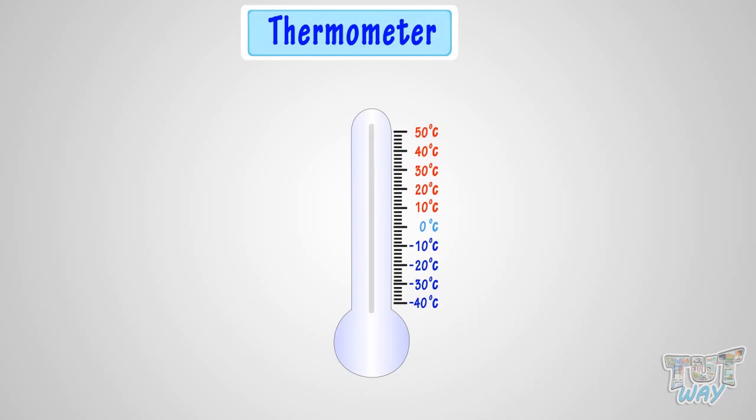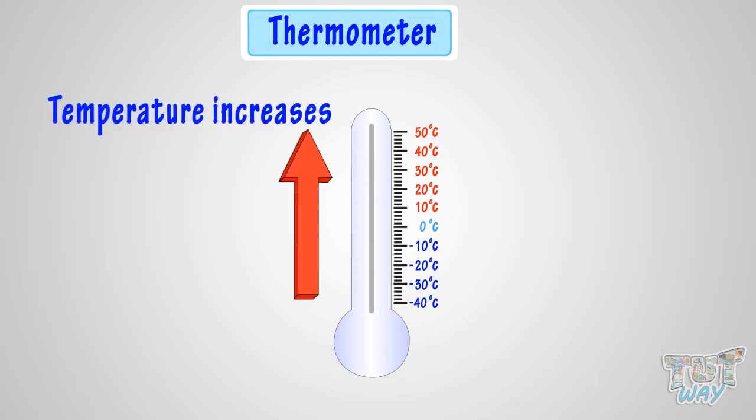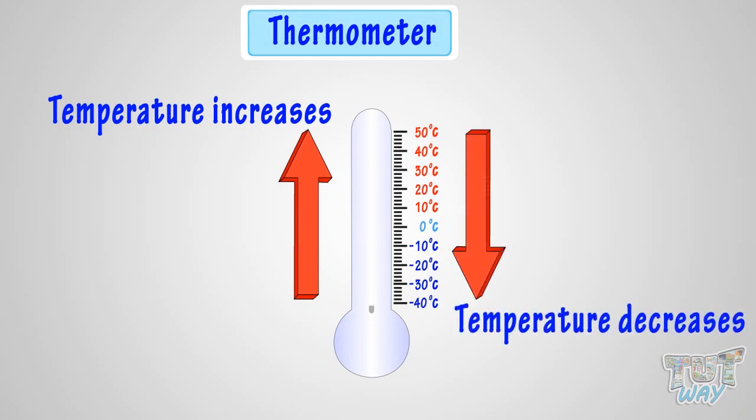Temperature is shown in increasing order starting from the bottom on this number line on the tube. The line goes up if the temperature rises and the line goes down if the temperature decreases.